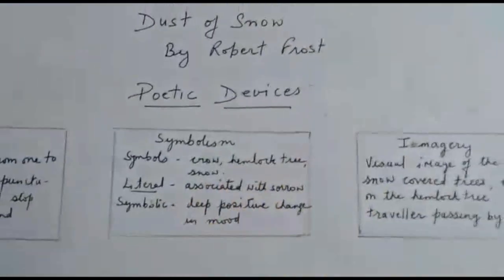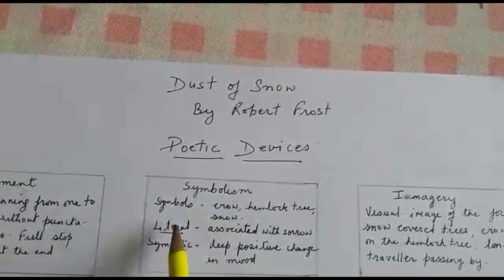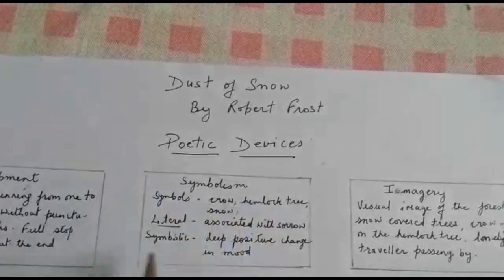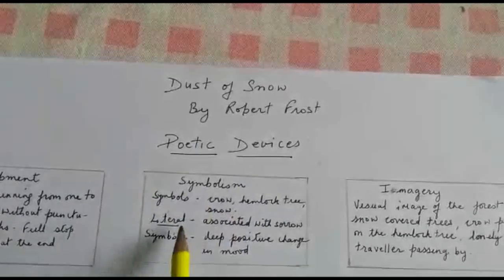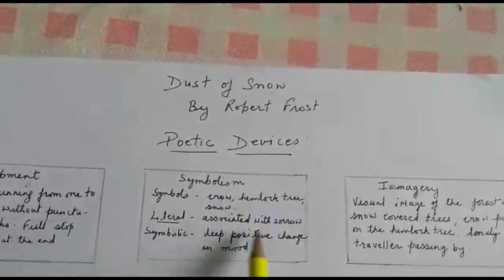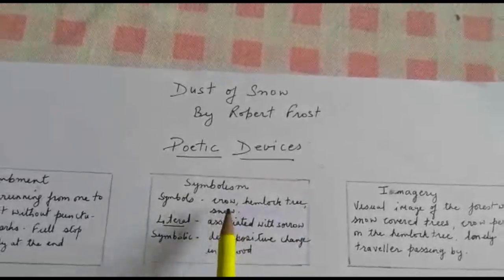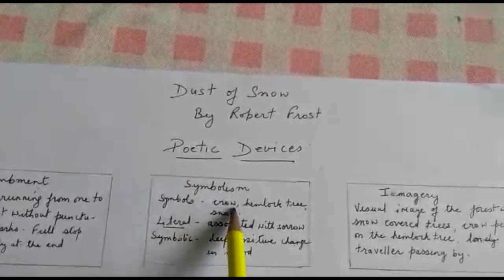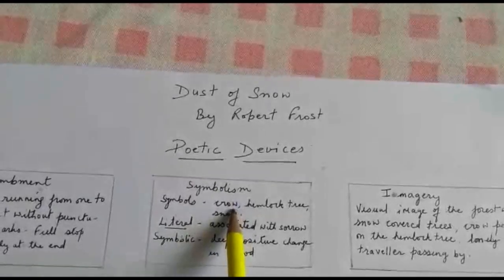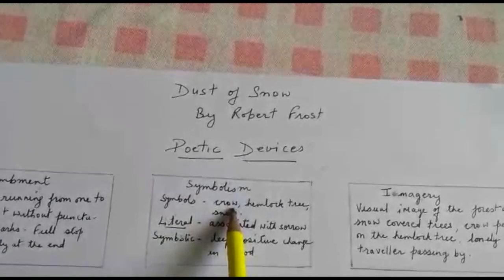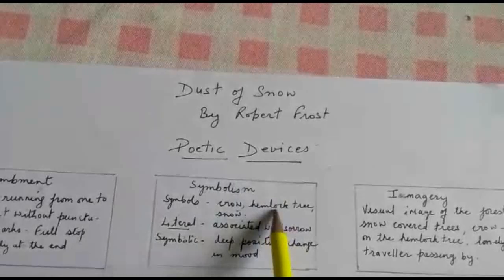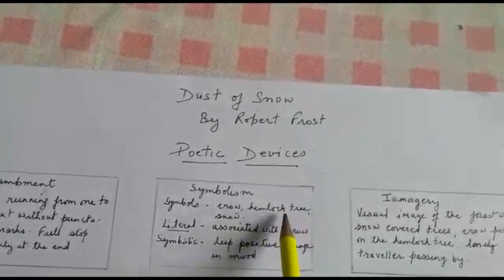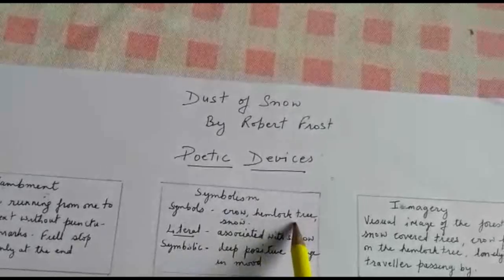Let's come to the next poetic device, that is symbolism. We've seen in the poem that there are three main symbols used: crow, hemlock tree, and snow. When we talk about the literal meaning, what are these three symbols associated with? They're associated with sorrow. When we talk about a crow, it brings all the negative thoughts because a crow is inauspicious — it brings bad luck, it's a bad omen. When we talk about a hemlock tree, it is also a poisonous tree, with white flowers, and normally poets do not write poetry on a crow or a hemlock tree because they are inauspicious.